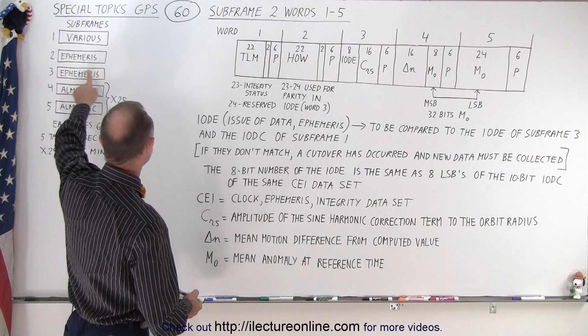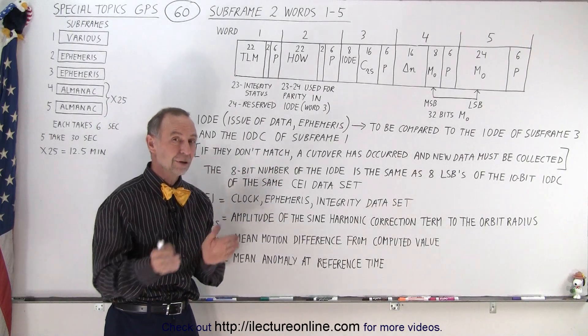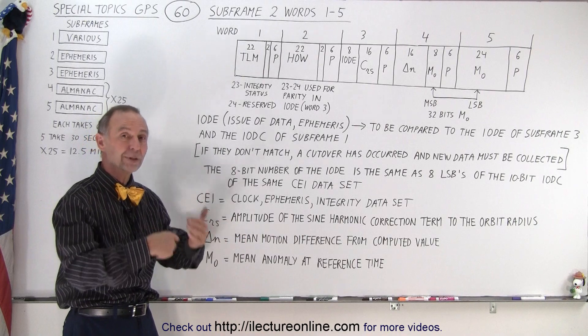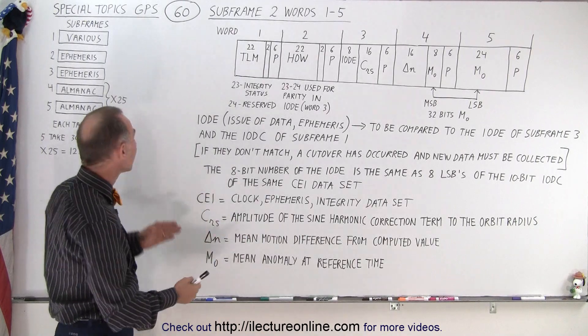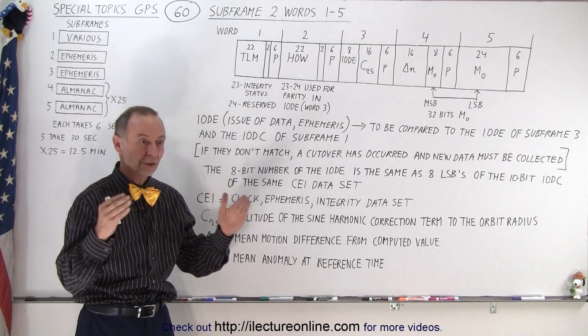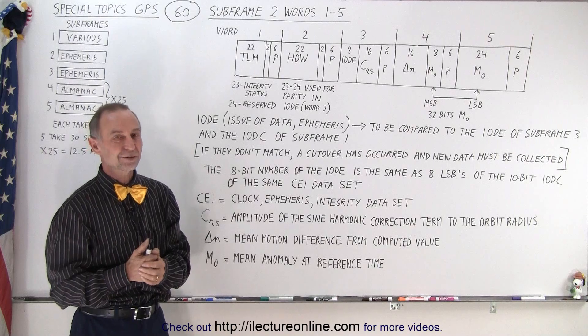So here's some correction terms that we use in trying to figure out exactly where the satellite is and this data is part of the ephemeris data. Notice there's two complete subframes used for that and these are the contents of the first five words of subframe 2 and then we'll look at the next five words of subframe 2 and then subframe 3 to give you an idea of all the parameters that are there that are being sent to us on the satellite to tell us where exactly that satellite is and that's considered the ephemeris data of the satellite.